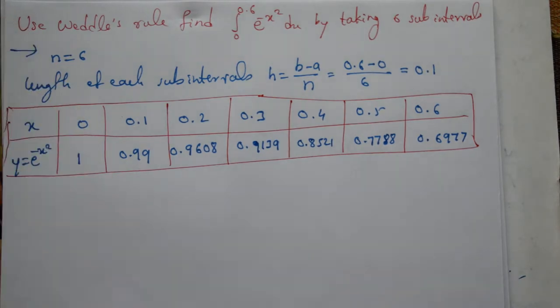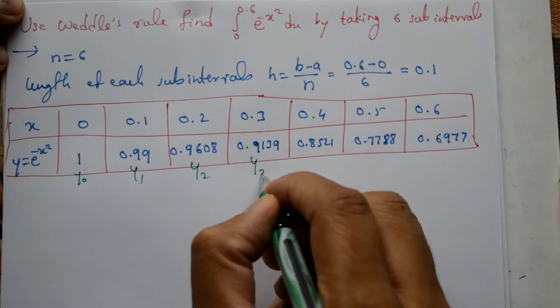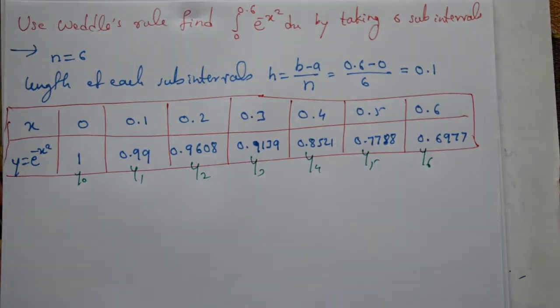These values will be used as y naught, y1, y2, y3, y4, y5, y6. Seven ordinates for six equal parts.